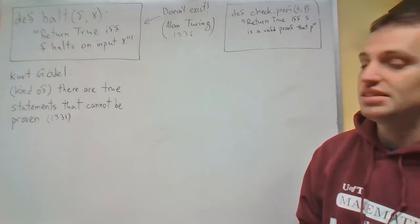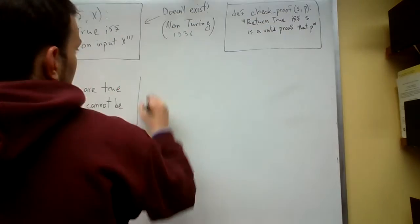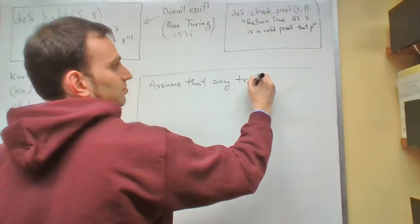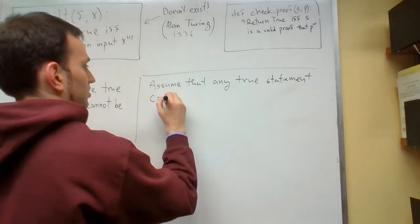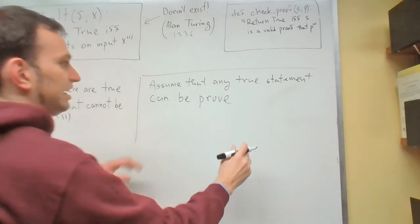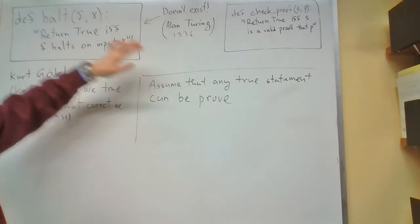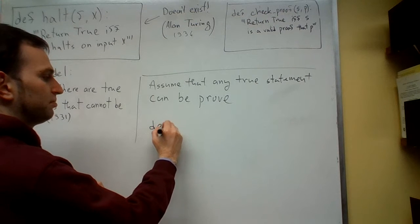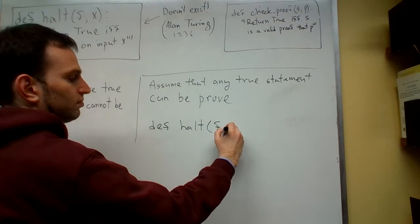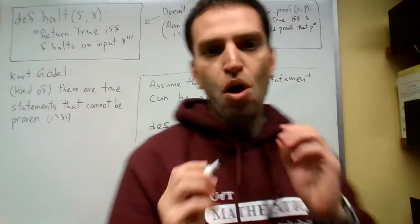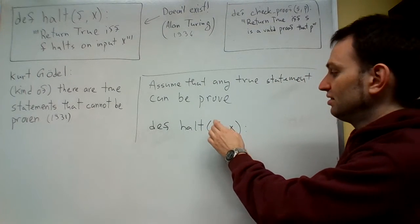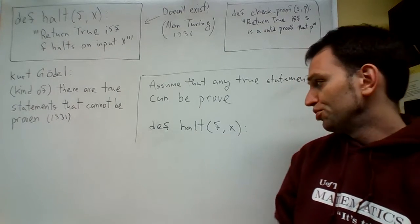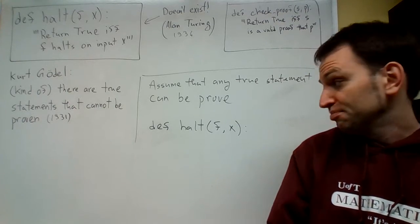Let's assume that is true and proceed with the proof. Assume that any true statement can be proven. The strategy is: we'll assume that, and using this fact we'll show that if this is true, then we can actually write HALT. So here's our HALT — what we'll do is try all proofs that F holds on X, and all proofs that F does not hold on X. If any true statement can be proven, eventually we'll find either a proof that F holds on X, or a proof that F does not hold on X.